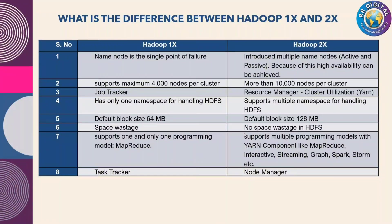Coming to the next point: Hadoop 1x has space wastage. For example, if your block size is 64 MB but you place only a 30 MB file, the remaining 34 MB space cannot be used — that is called space wastage in 1x architecture. But in 2x there is no space wastage. The remaining 34 MB can be assigned to other data files by the NameNode, meaning a single block can store different data files. So there is no space wastage in HDFS.